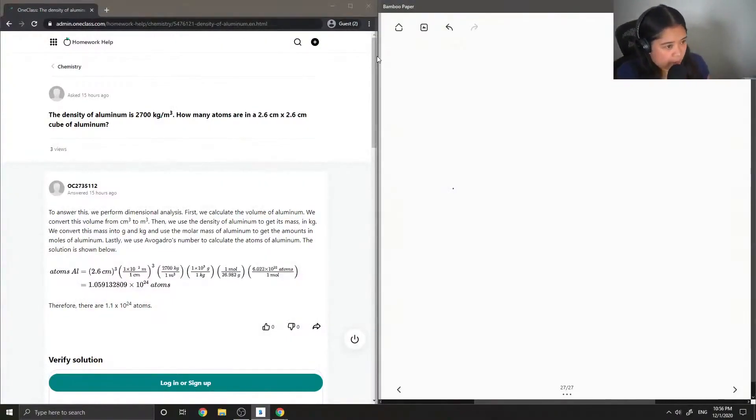Question 1 states that the density of aluminum is 2700 kg per m³. How many atoms are in a 2.6 cm x 2.6 cm x 2.6 cm cube of aluminum? So this is a multi-step question.